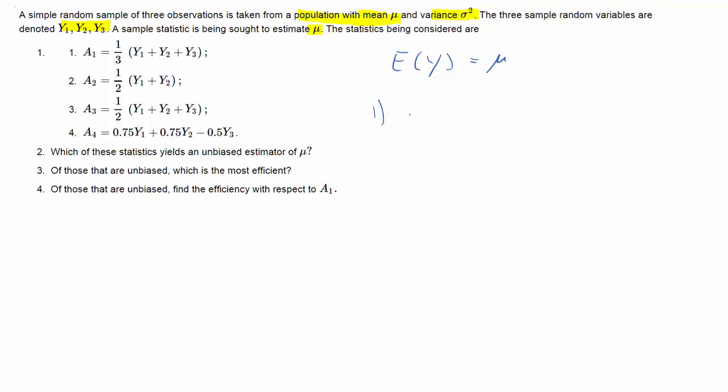So there are four options here which somehow use observations y1 to y3 and we are being asked whether these particular estimates we are given, for instance A1, whether that is unbiased, meaning is the expected value of A1 equal to mu.